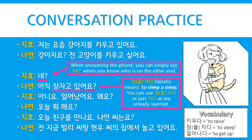Next we have a second unrelated conversation. First, 지효 says 네. Note that when you're answering the phone, you can simply say 네 when you know who it is on the other end. 아직 잠자고 있어요? — 'Are you still sleeping, currently or continually?' Note that 잠자다 literally means 'to sleep a sleep,' so you can use 잠자다 or just 자다, as we already learned.